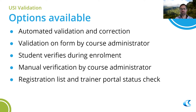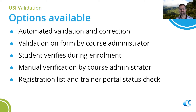The student can also verify during enrolment — you can have a validation check against first name, last name, date of birth, and USI as part of the form process. This information also appears on the registration list and in the trainer portal. The trainer portal can be used to send off the USI for validation as well. So if you have a last-minute booking where the USI needs to be validated, the trainer can trigger USI validation using the trainer portal.